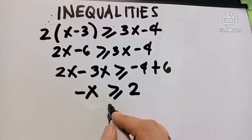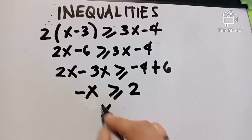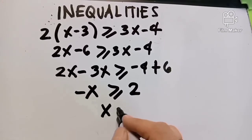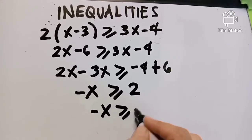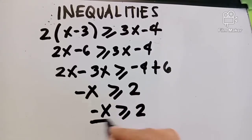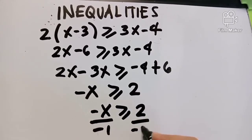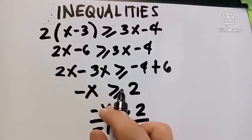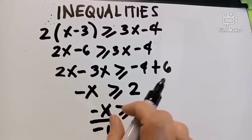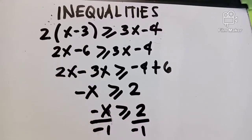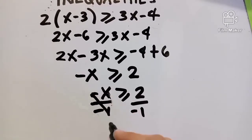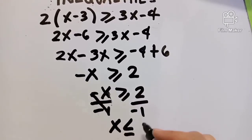Take note: we divide both sides by negative 1. When we divide by a negative number, the inequality sign flips. So less than or equal to becomes greater than or equal to. Dividing 2 by negative 1 gives negative 2. So the result is X less than or equal to negative 2.